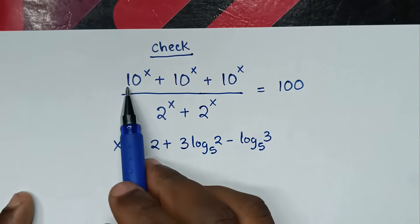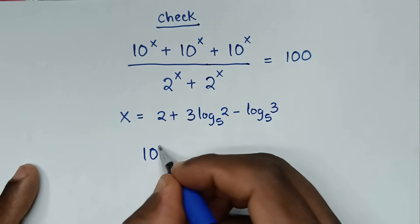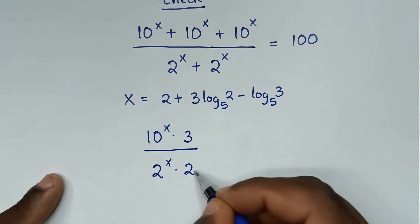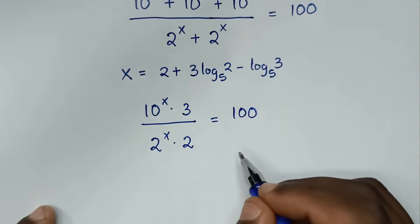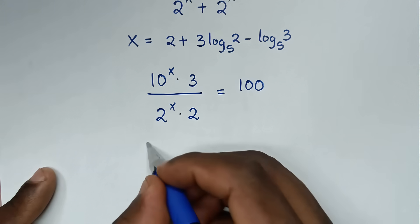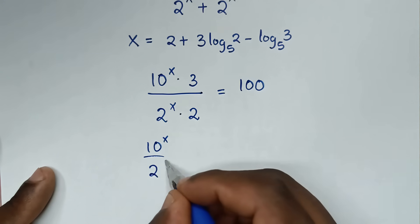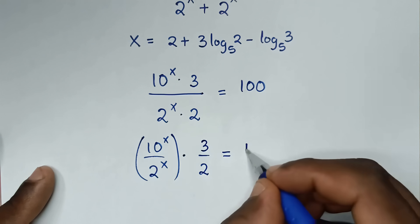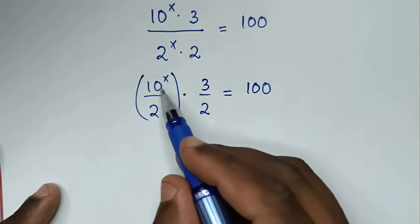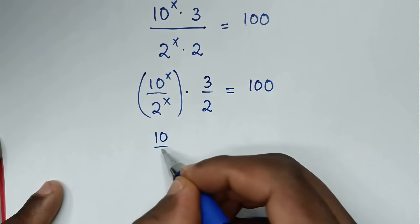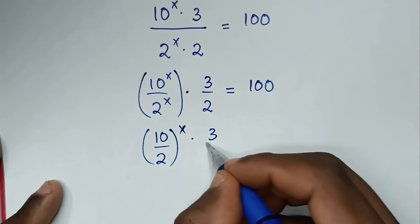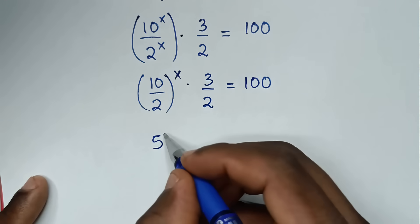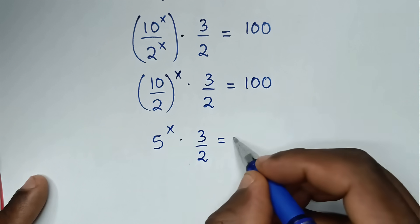Now in the next step, let's check this answer if it is correct. From our problem, which is 10 power x plus 10 power x plus 10 power x over 2 power x plus 2 power x equals 100, we'll substitute our answer x equals 2 plus 3 log of 2 base 5 minus log of 3 base 5. The numerator simplifies to 10 power x times 3, and the denominator to 2 power x times 2, and then 10 over 2 gives 5, so 5 power x times 3 over 2 equals 100.